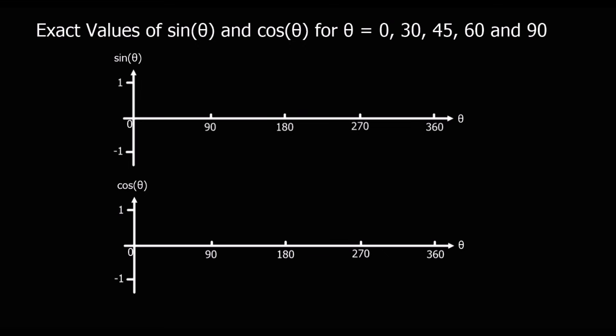So the sine graph first. It starts at 0, starts down here, and what we do is we go up, up to 1, down to 180, at 270 we go to minus 1, and back up to 360. Not the perfect drawing, but it's a nice wave shape.